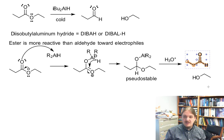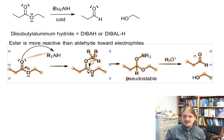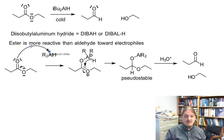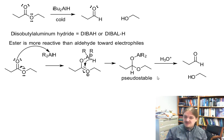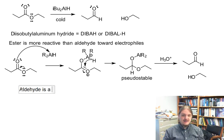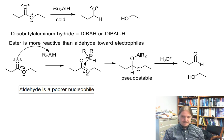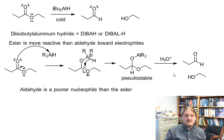Under acidic aqueous workup, we should expect it to come apart into an aldehyde, some aluminum byproducts, and the alcohol. It is worth noting that if you elevate the temperatures above zero degrees Celsius or maybe even lower, diisobutyl aluminum hydride will start reducing aldehydes and ketones. But because the mechanism has changed up a little bit due to the initial electrophilic character of the reducing agent, sometimes it's like the aldehyde never really forms. So we have an opportunity to be selective because the aldehyde is less reactive, but it's less reactive in a different way.